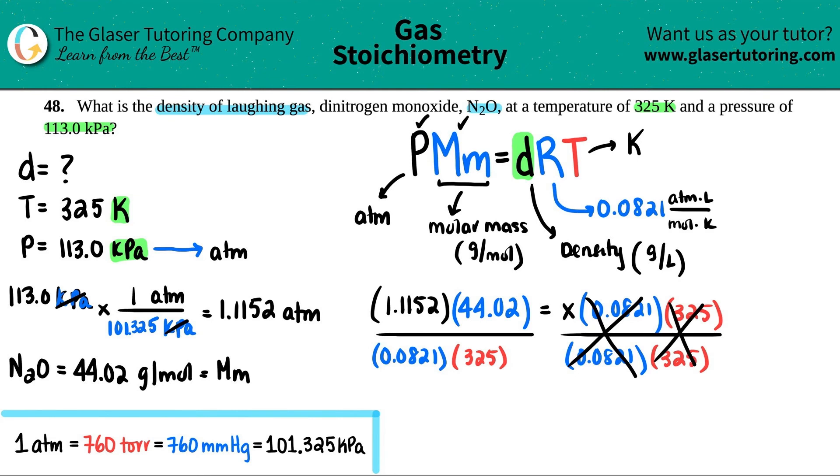And that will cancel out the R value. Goodbye. Cancel out the temperature on the side. So we basically just have X equals. And now let's just plug those numbers in. 1.1152 times 44.02 divided by 0.0821 and then divided by 325.